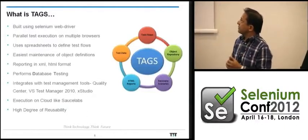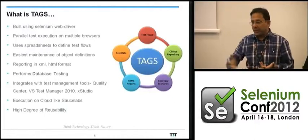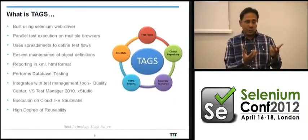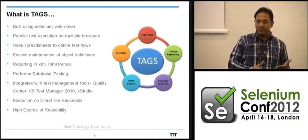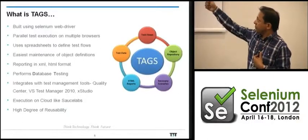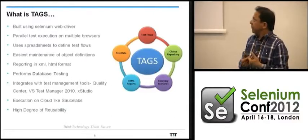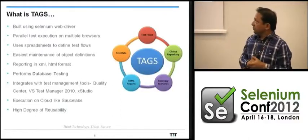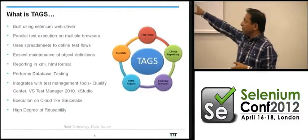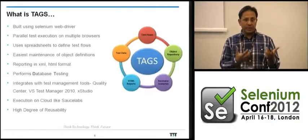Because the object repository is separated from the main execution, it's easy to maintain. You have additional features like tying into a database to get values and check at runtime. You could also do A/B testing. We are partnered with Sauce Labs and have clients who use TAGS to execute their test suite on the cloud.